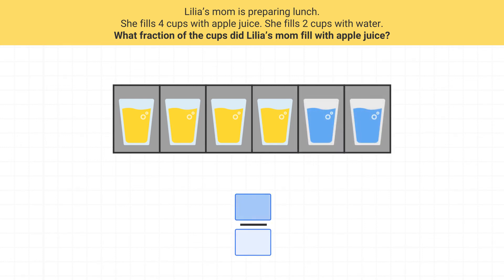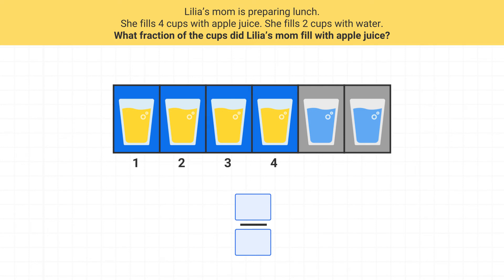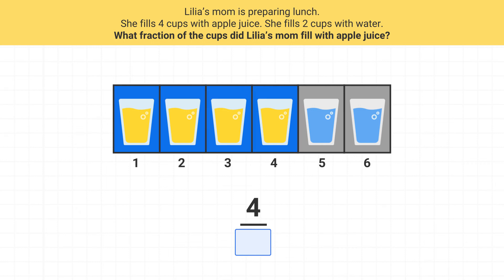What should the numerator of my fraction be? We're looking for the fraction of cups that are filled with apple juice, so the numerator will be the number of cups of apple juice. There are four cups of apple juice, so our numerator is four. The denominator will be the total number of cups. While the problem didn't tell me the total, I can count up that all together there are six cups, so my denominator is six. Four sixths of the cups are filled with apple juice.